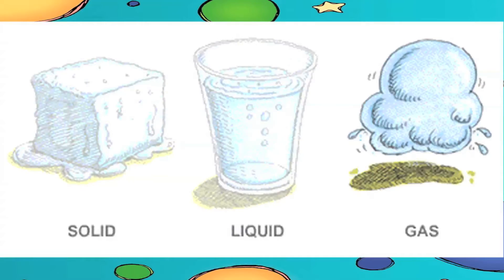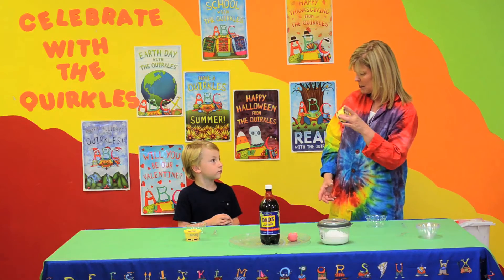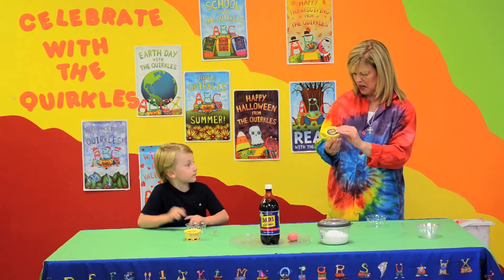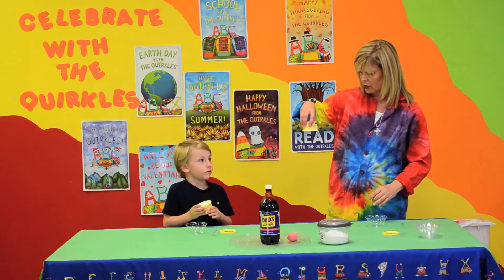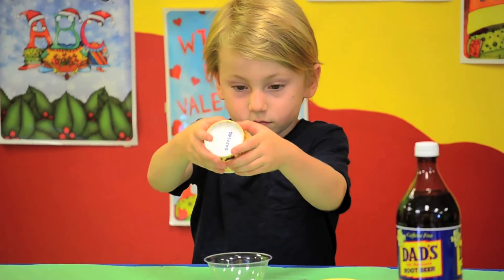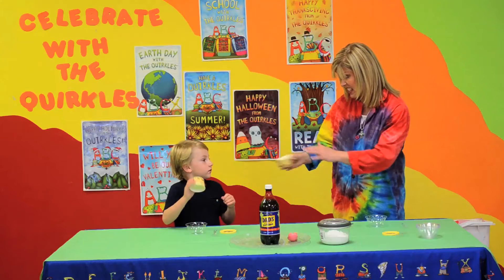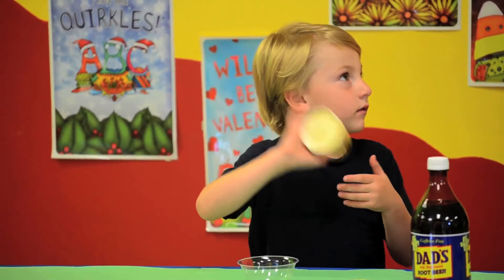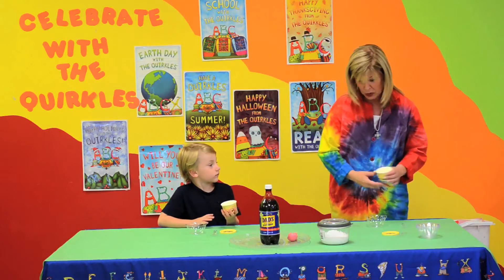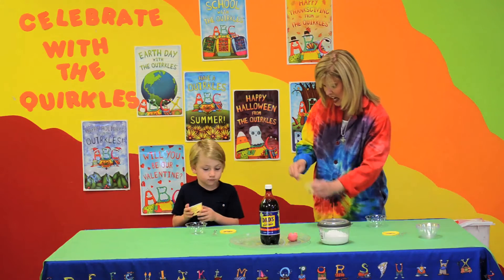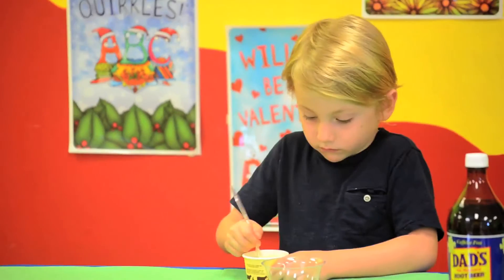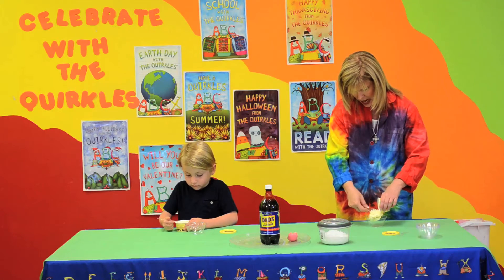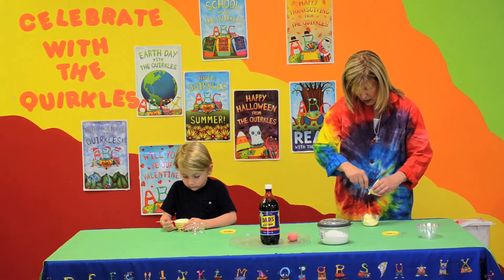We're going to talk about the states of matter: a solid, liquid, and gas. And look, we just happen to have some ice cream. Rowan, pick up your ice cream here. Let's take off our lid and let's see. Rowan, is your ice cream a solid, a liquid, or a gas? Does the ice cream move? No, it's a solid, isn't it? It probably will be a liquid soon if we let it melt. So let's take our ice cream and dip it into our bowl here, because we're going to demonstrate how we can have a solid, liquid, and gas by making root beer floats.